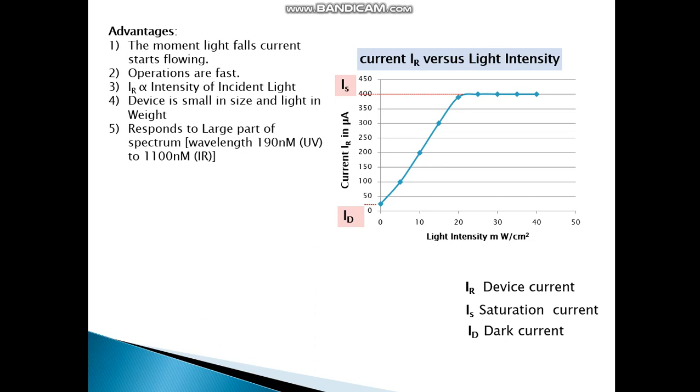Advantages of the photodiode: the moment light falls, currents are flowing, operations are fast. IR is directly proportional to the intensity of the incident light. Device is small in size and light in weight. Response to large part of the spectrum.